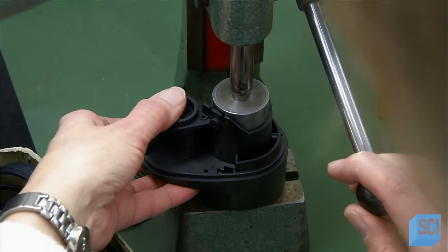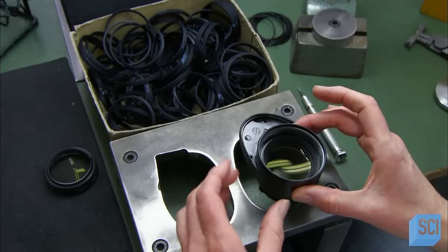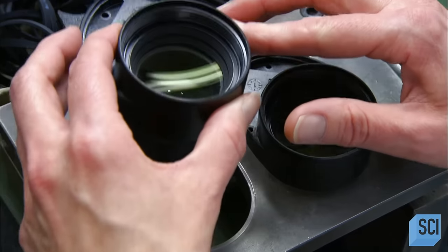It's time to begin assembling the binoculars. First, the objectives go into the housing, which is usually made of plastic, aluminum, or carbon.